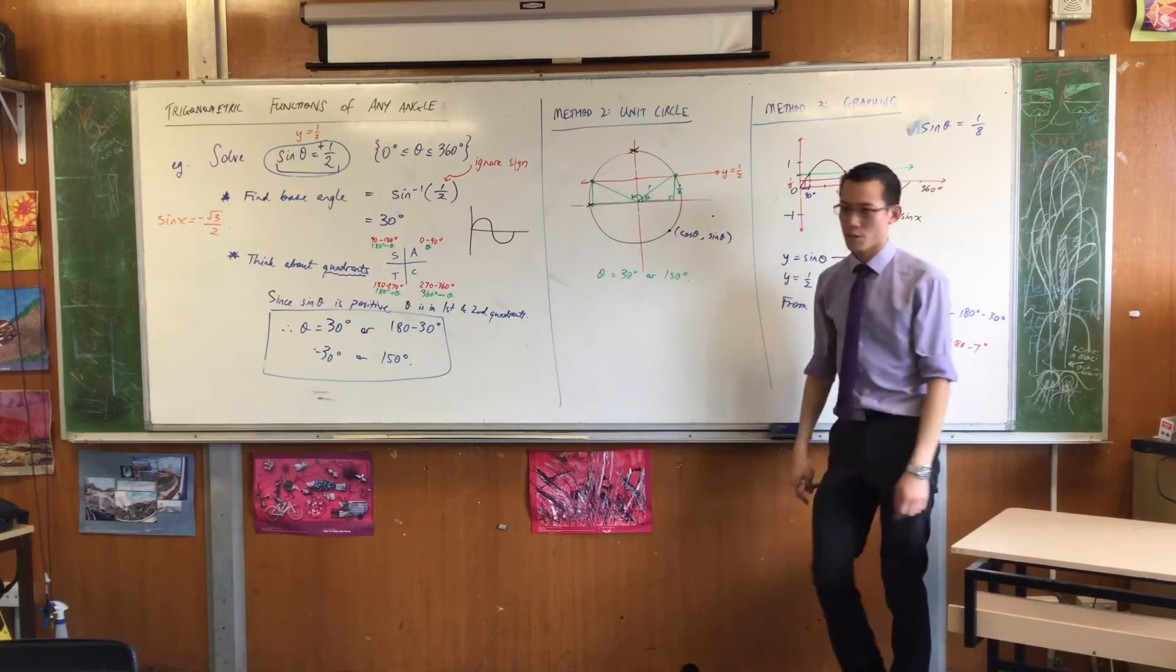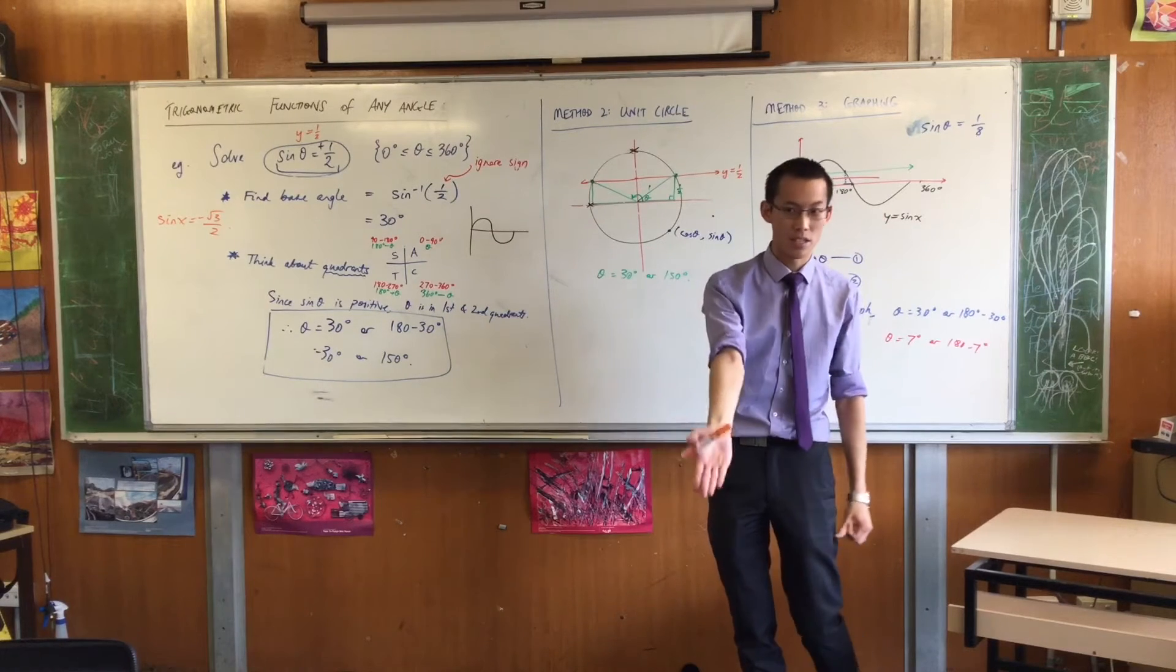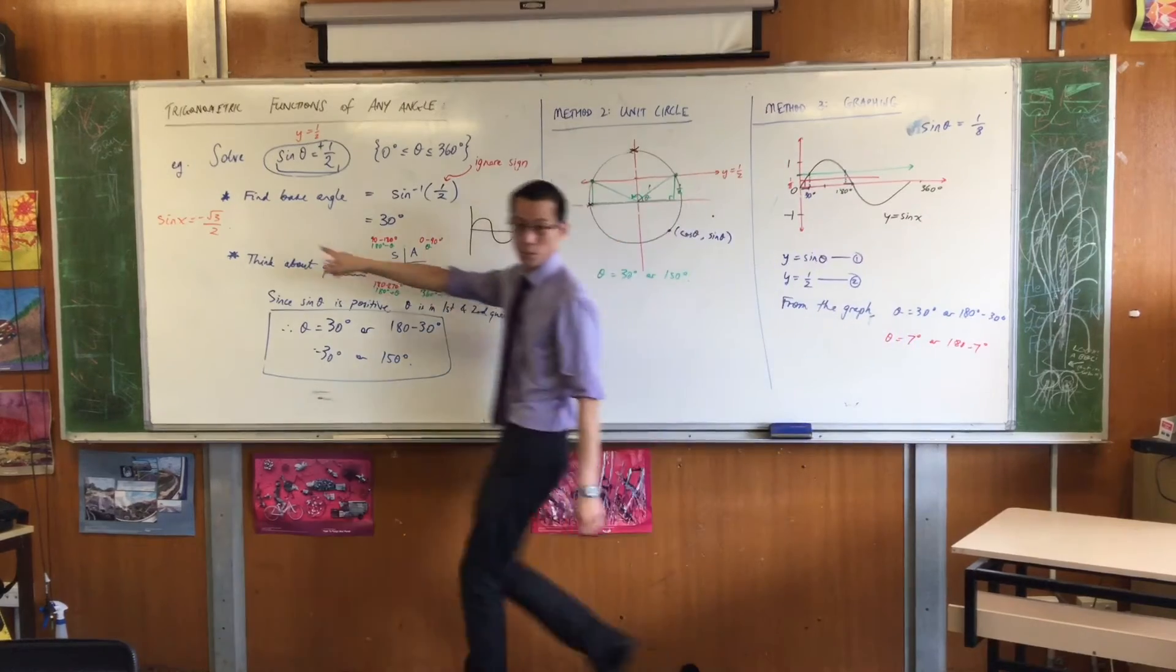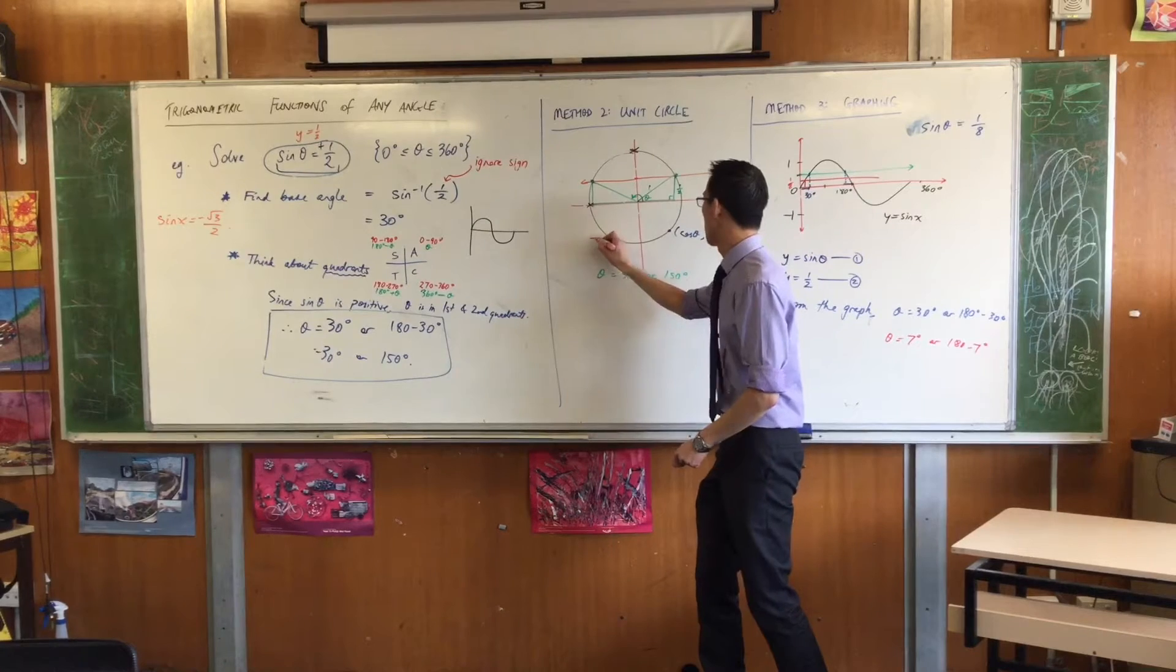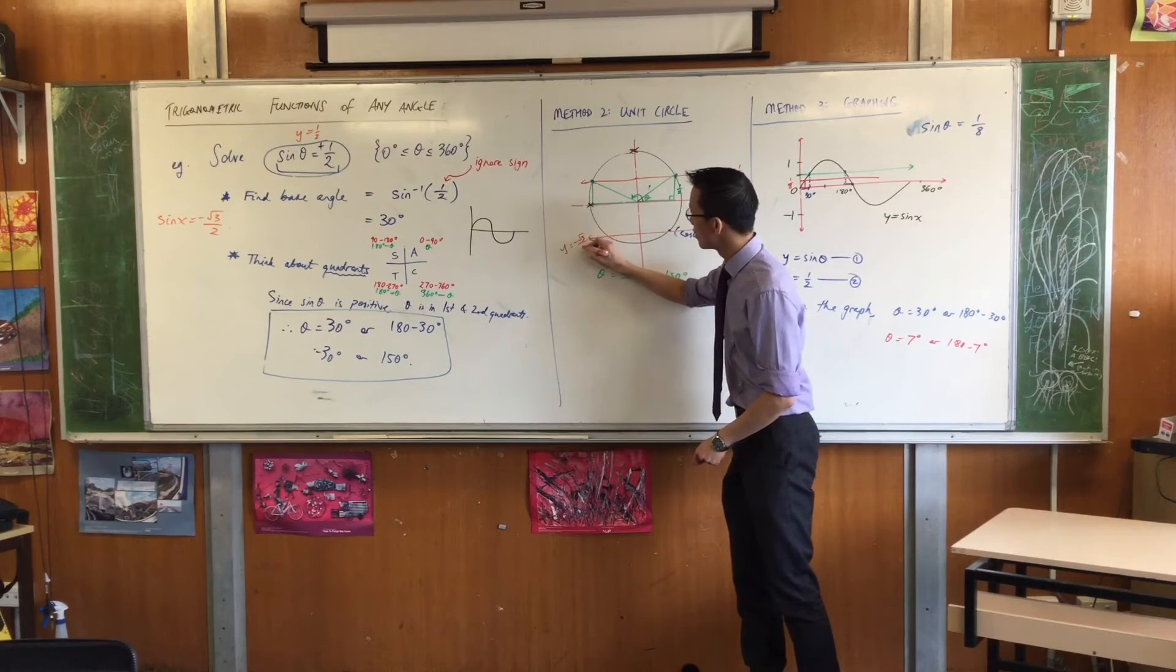Minus root three, I happen to know, is about 1.7. I think if you punch this in, you'll get negative 0.866, whatever it is. That's what negative root three on two is. So I'm just going to draw that somewhere about there.